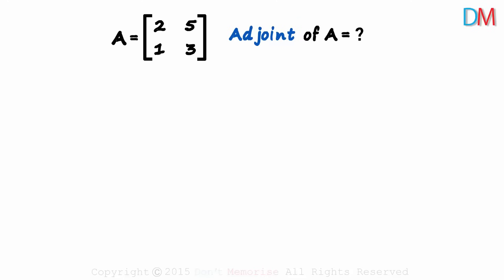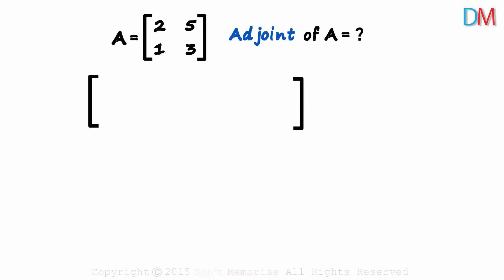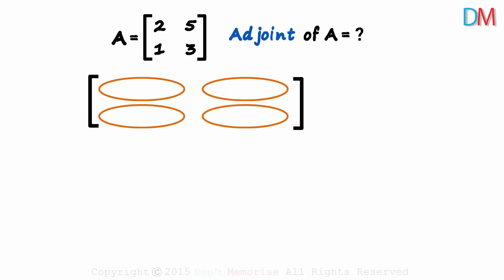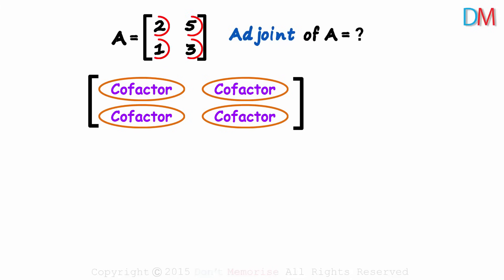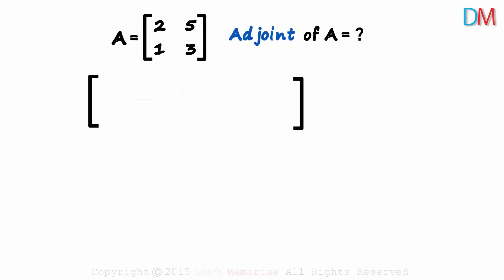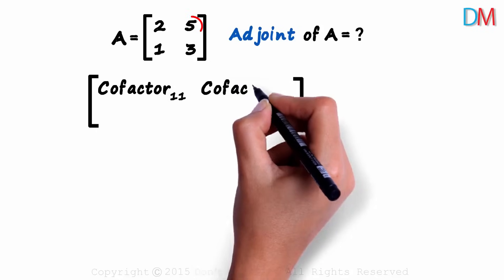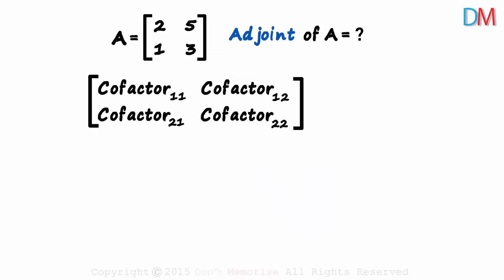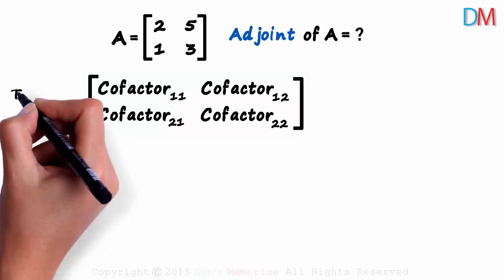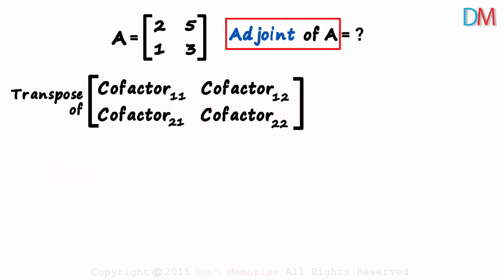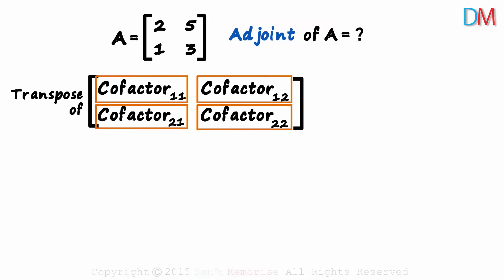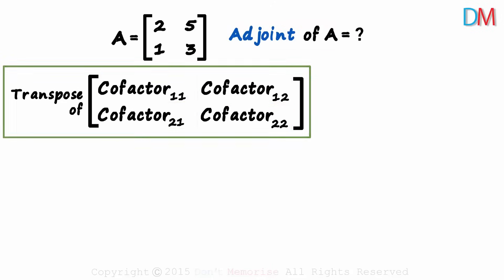To find the adjoint, we first need to find some matrix of the same order as the original matrix. Each element of this matrix will be the cofactor of the corresponding element from the original matrix — the cofactor of the 1,1 element, the cofactor of the 1,2 element, and so on. Once this matrix is done, we find its transpose, and that will give us the adjoint of A.